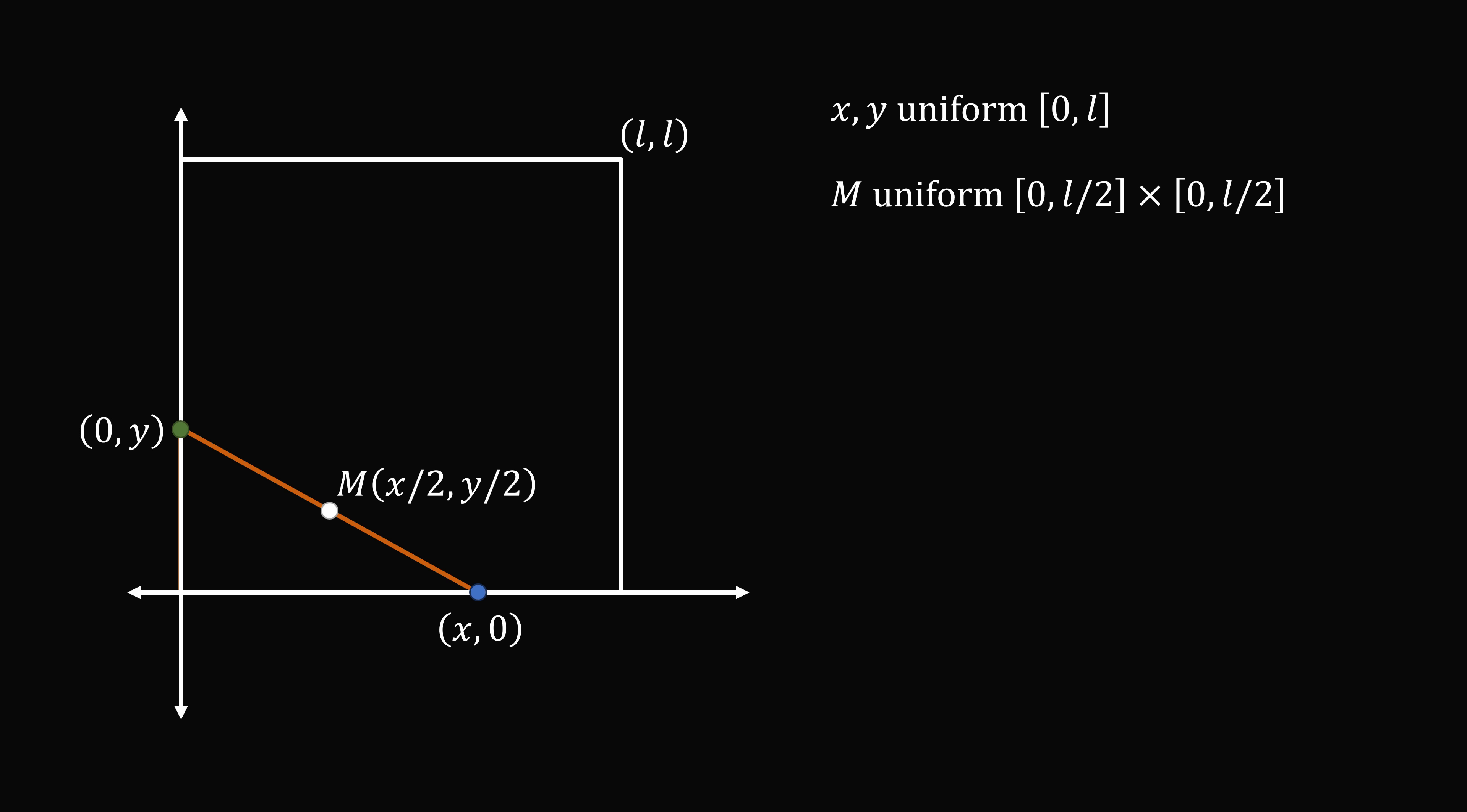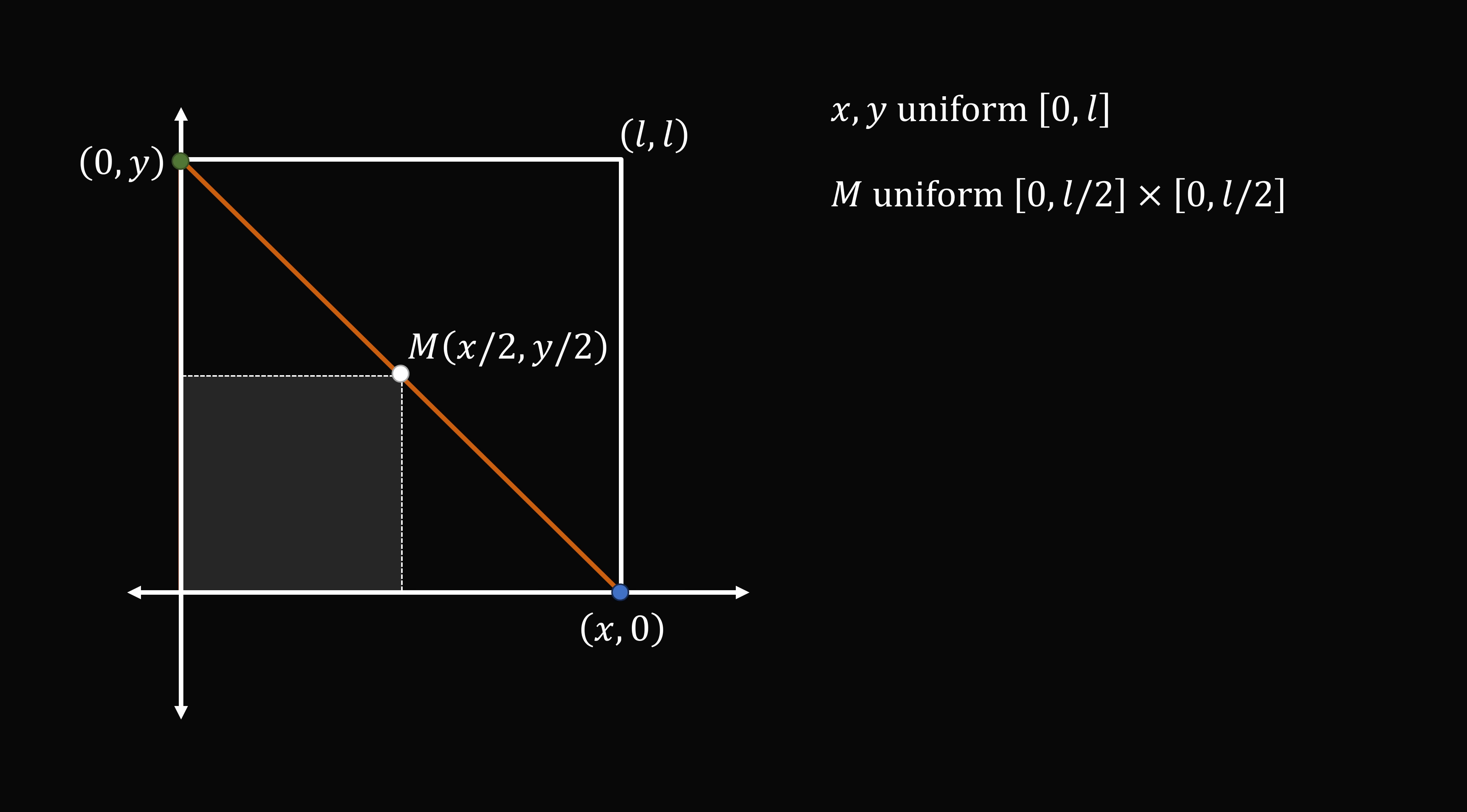Let's consider the extreme cases. Suppose the second point is all the way at the left top corner of the square, and the first point is all the way at the bottom right corner. This will be the maximum values for the midpoint M of x/2 and y/2. This will be the corner of a square with endpoints (L/2, L/2). Now for any other way that we pick the points, we will be stuck somewhere inside of this square. So the point M is uniform between all of the points of this square.